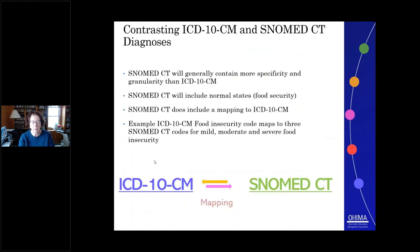When looking at different terminologies for activities like diagnoses, it's important to understand the difference between ICD-10 and SNOMED-CT so that you are using the appropriate terminology based on the need. SNOMED-CT will generally contain more specificity than ICD-10, and it will also include normal states, such as identifying when an individual is food secure. There is a mapping between SNOMED-CT and ICD-10, which is useful when you need to go between these two systems. As an example of the specificity, in ICD-10 there is only one food insecurity code that maps to three SNOMED codes identifying mild, moderate, and severe food insecurity.